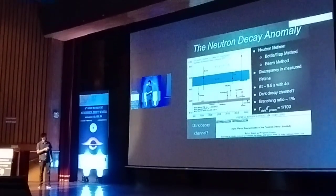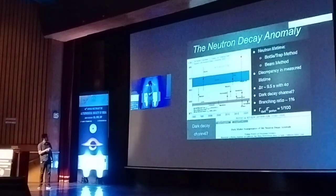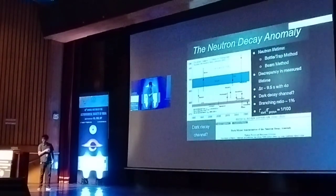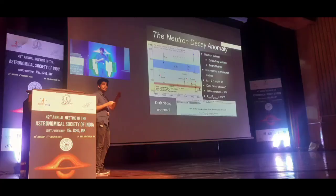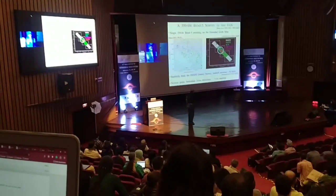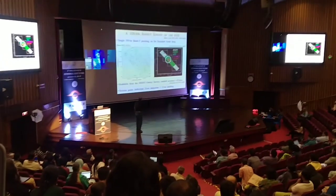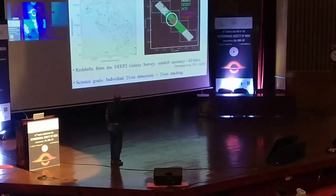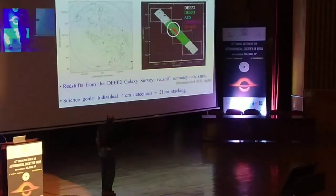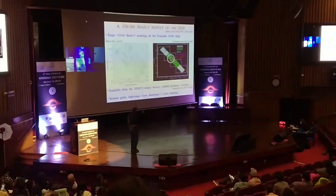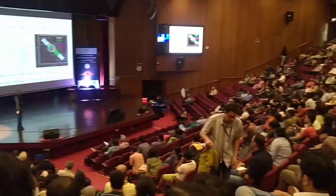The first thing I would like to mention is the neutron decay anomaly. You see in cyan, magenta and red — the three boxes over here are HST.